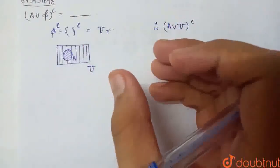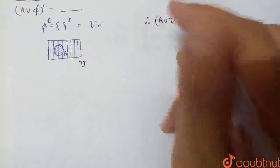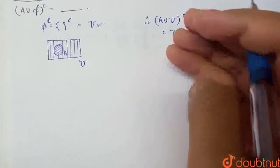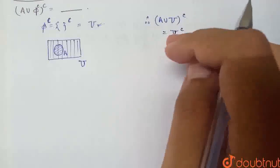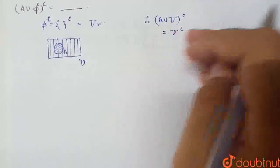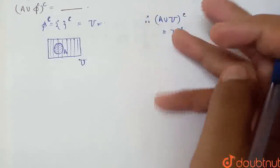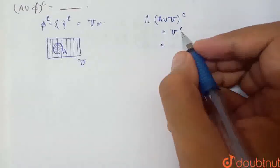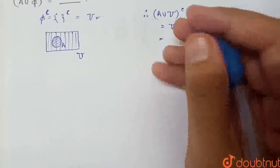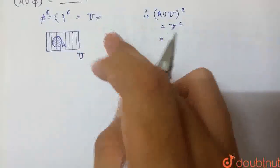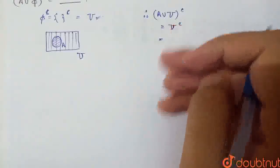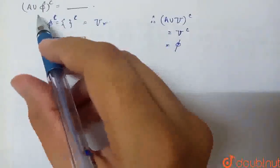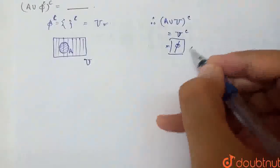So A union the universal set gives us the universal set. Now we need the complement of that. The complement means we take the opposite — the set of elements not present. Since the universal set contains all elements, its complement is the set from which we remove all elements. So the complement of the universal set is the empty set. Therefore, (A ∪ φᶜ)ᶜ is equal to the empty set.